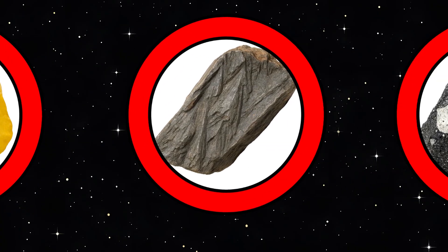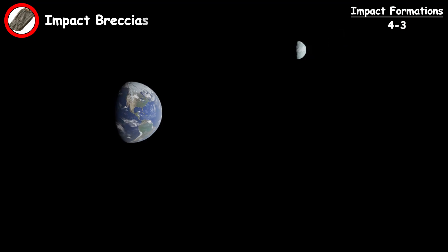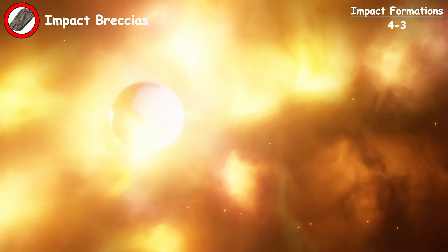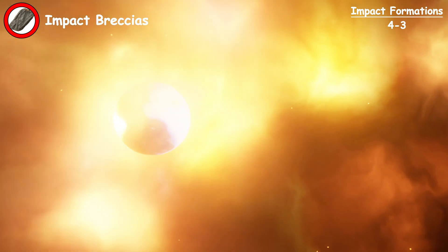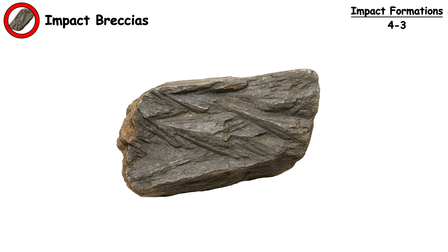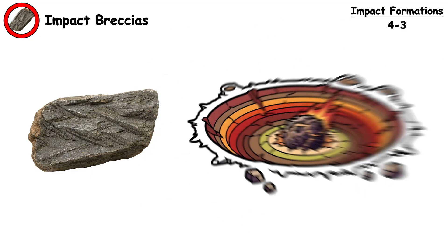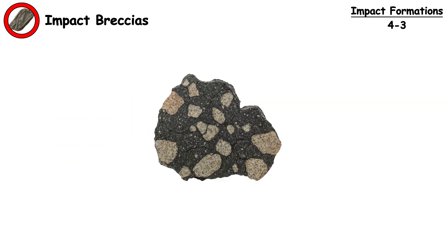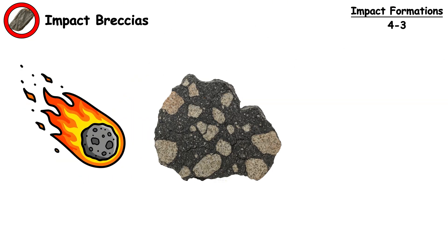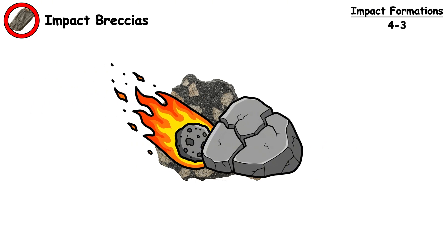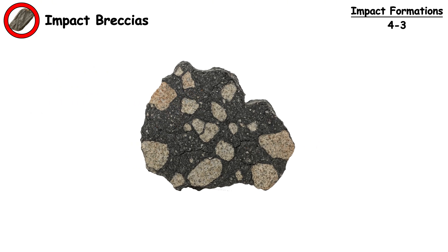Impact breccias. They form when a meteorite strike shatters bedrock, mixing fragments into a chaotic mass that partially melts and then re-solidifies. These rocks are found within and around impact craters. Some impact breccias contain actual meteorite fragments mixed with terrestrial rock, creating true mixed compositions.